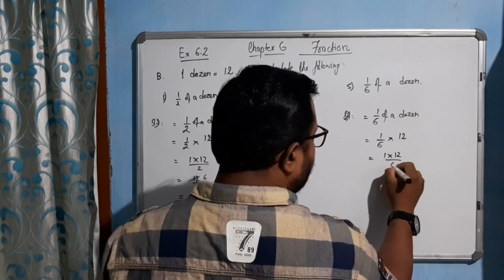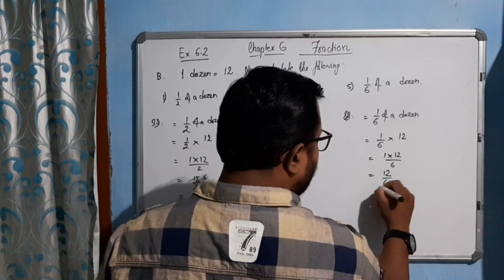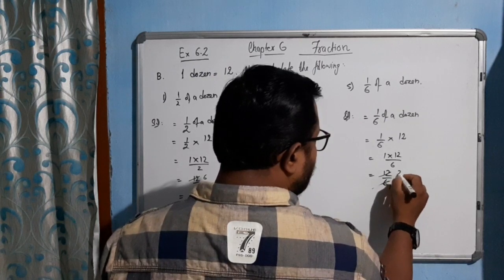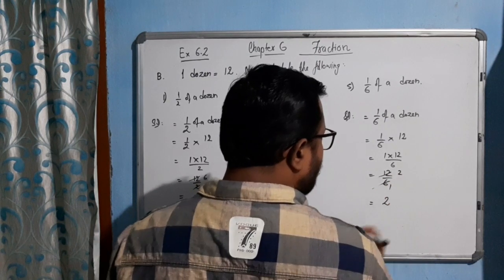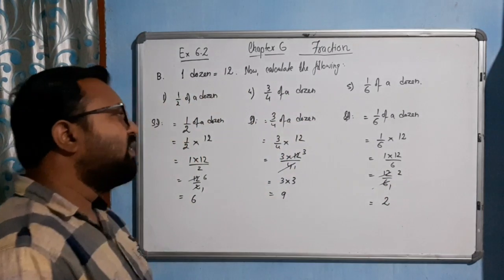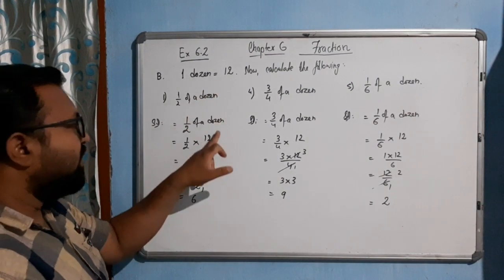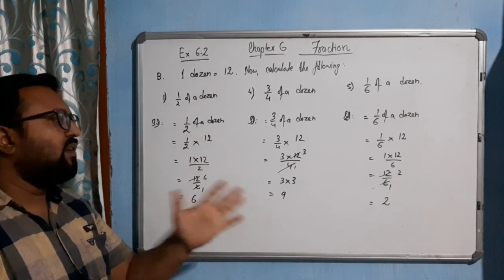It is 1 into 12 by 6, means 12 by 6. 6s are 6, 6, 2s are 12. It means 2. It is very simple. In place of dozen, we have to write the 12 and simply do the calculation.